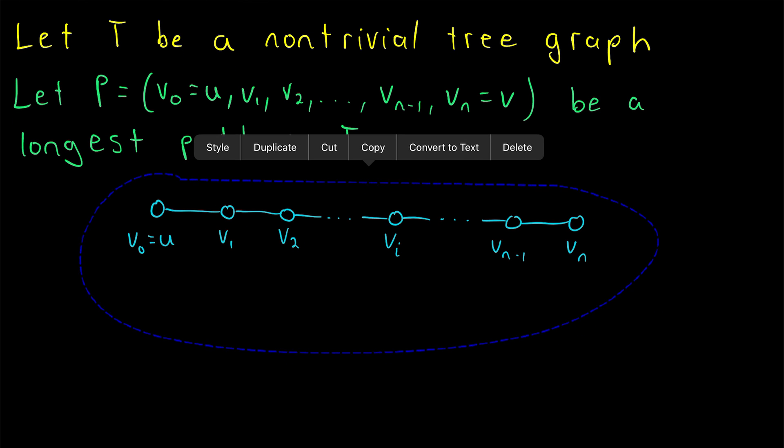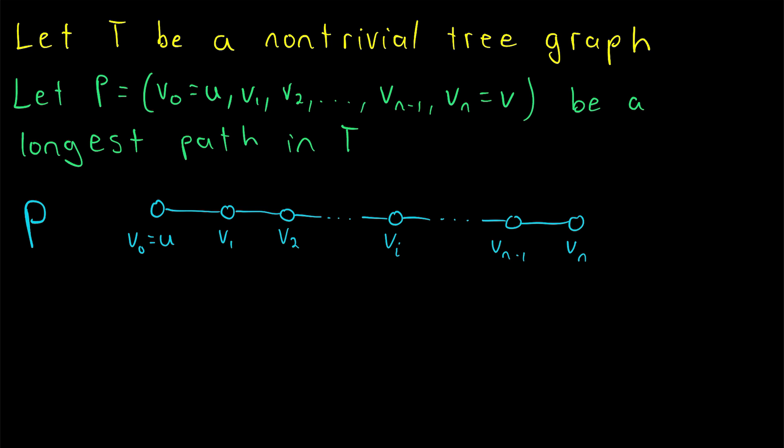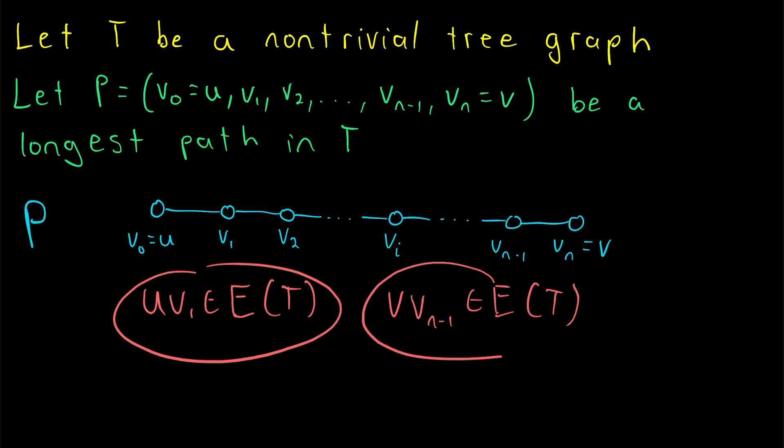So here we just have a simple drawing of our path P. And remember that this last vertex Vn, we're also calling V. We can see immediately that both U and V have to have at least one neighbor, of course, since they're in this path. U is adjacent to the following vertex V1. So we could write UV1 is an element of the edge set of T. Additionally, the vertex V, the last vertex in the path, is adjacent to the preceding vertex Vn minus one. So we could say V Vn minus one is an element of the edge set of T as well.